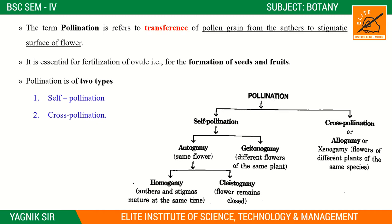Autogamy is further divided into two types: homogamy and cleistogamy. In homogamy, the anthers and stigmas are mature at the same time. In cleistogamy, the flower remains closed — the flower does not open and pollination occurs within the bud itself.